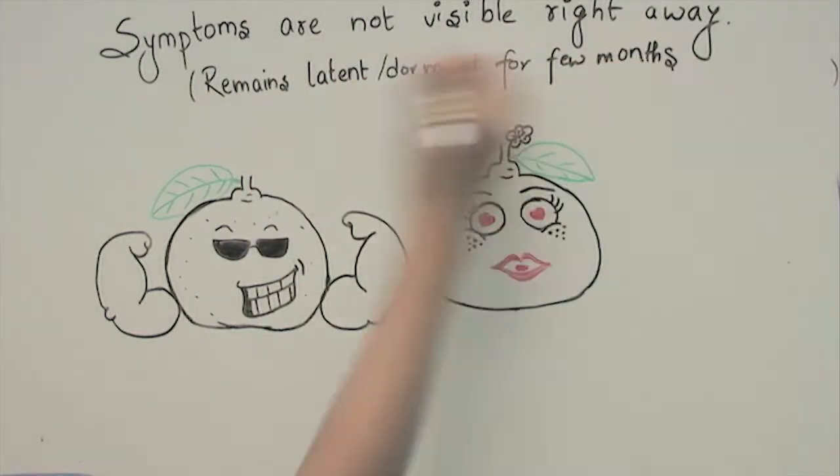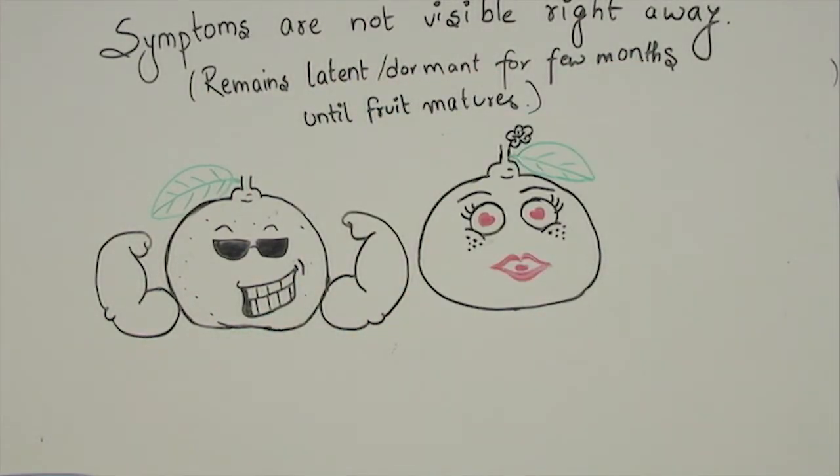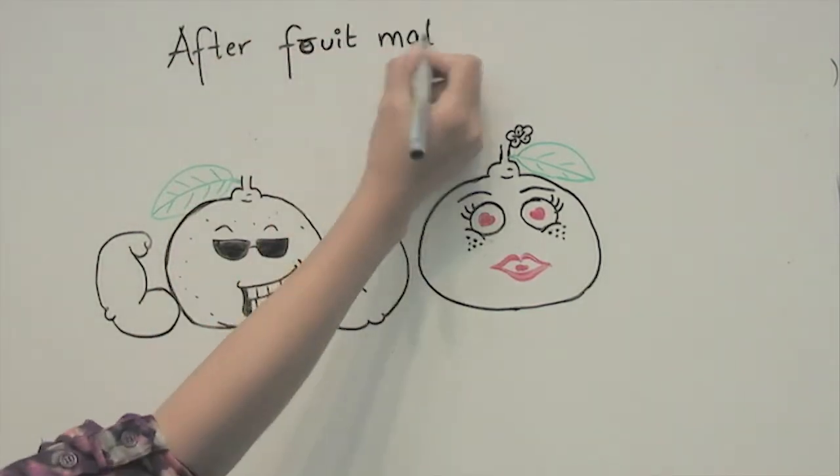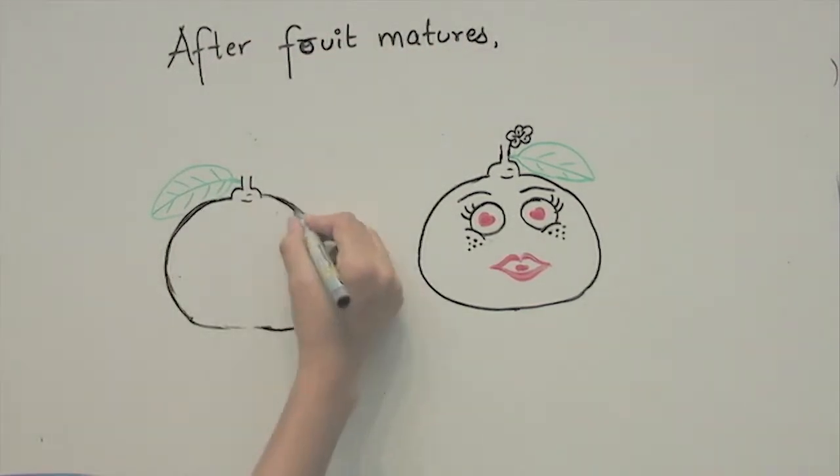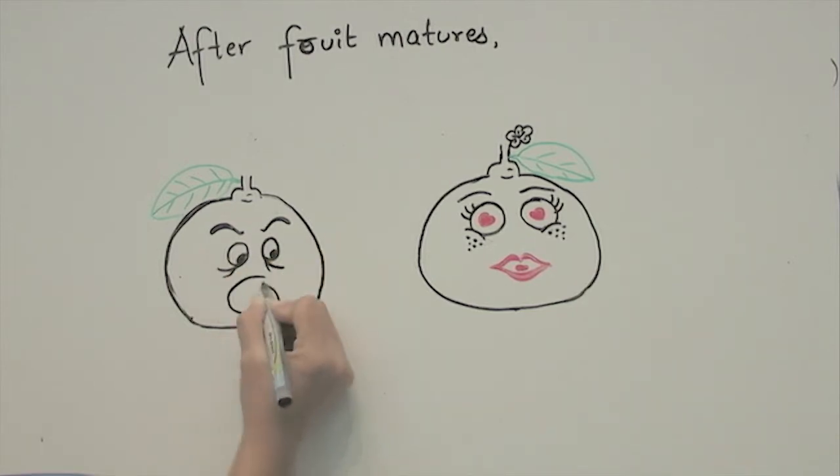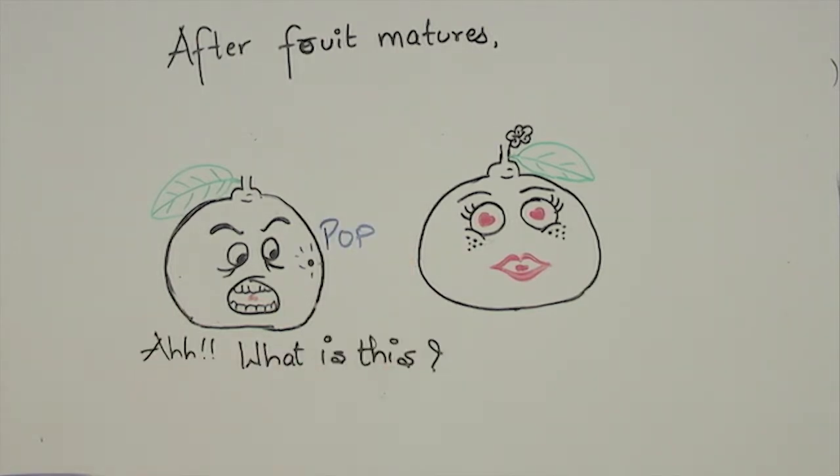The infection remains latent for a few months until the fruit matures. And when the fruit matures, lesions form and it produces pycnidia and conidia, the lesions. And there's the pop of the lesion.